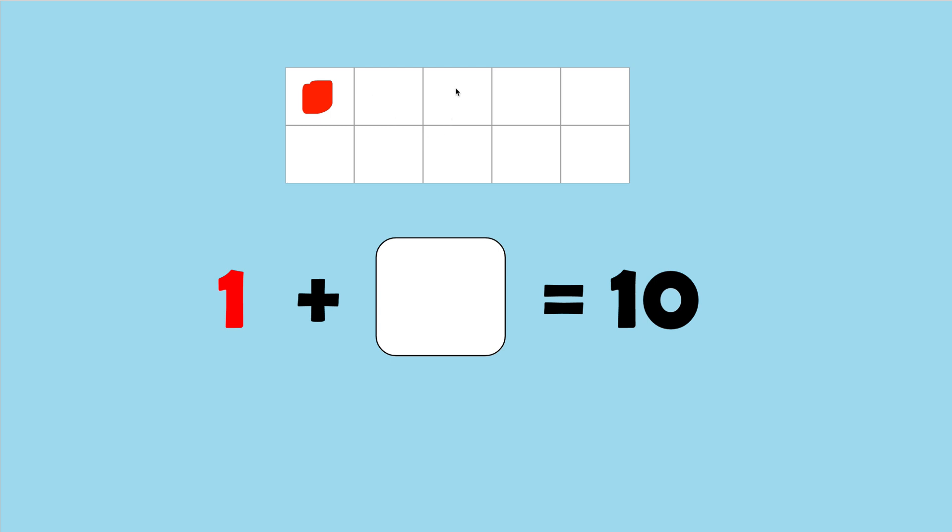If I were to count on and put a counter on each of these boxes, it should give me 10. Let's practice counting on and then count how many we added. We have 1, and let's count on from 1.